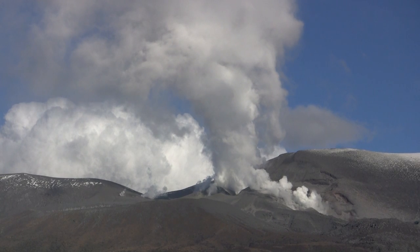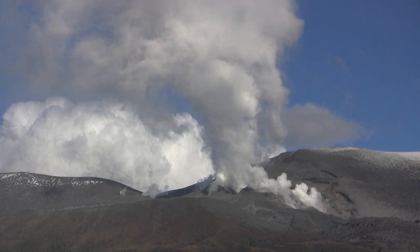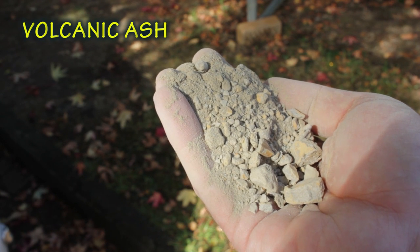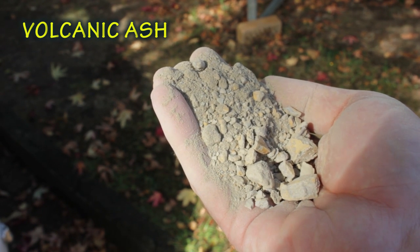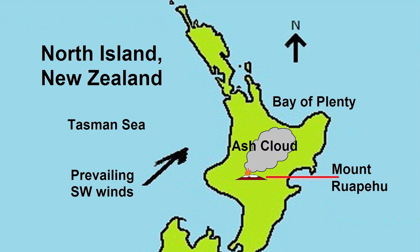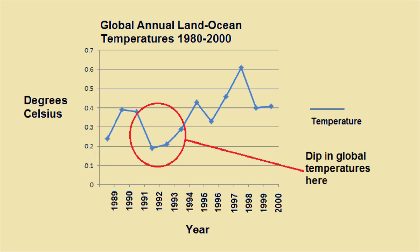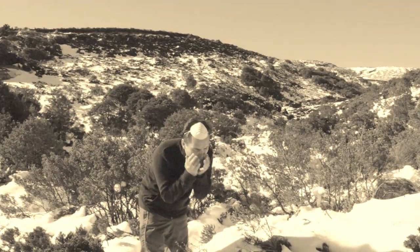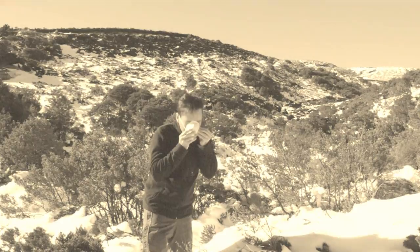Volcanoes also emit a lot of airborne material. Ash is debris less than two millimeters in diameter. Ash clouds can reach a height of 50 kilometers and can be carried a long way by wind. Ash can stay in the atmosphere, causing global variations in weather patterns. Ash falls do not cause any deaths but can lead to breathing difficulties.